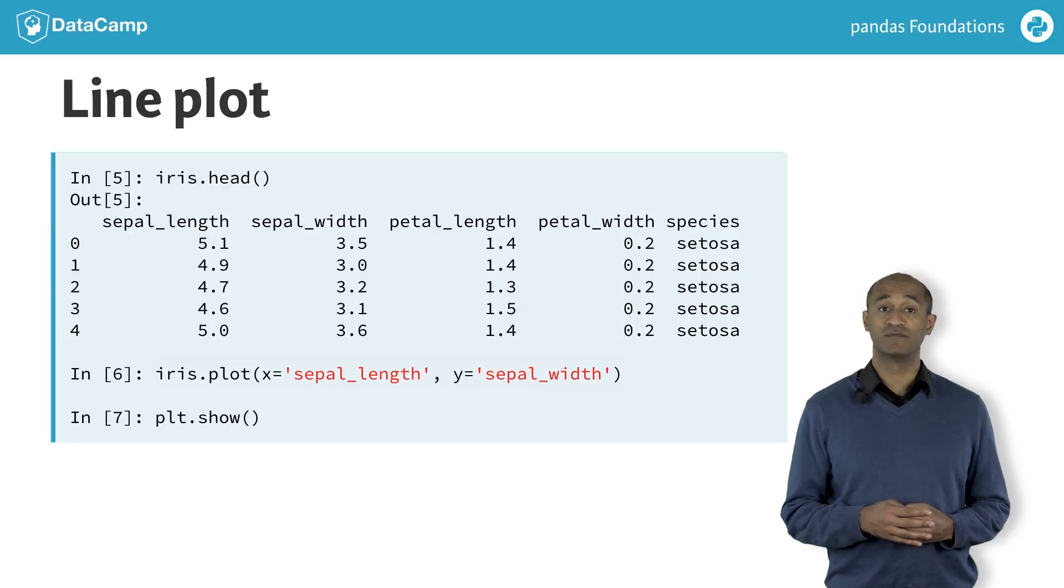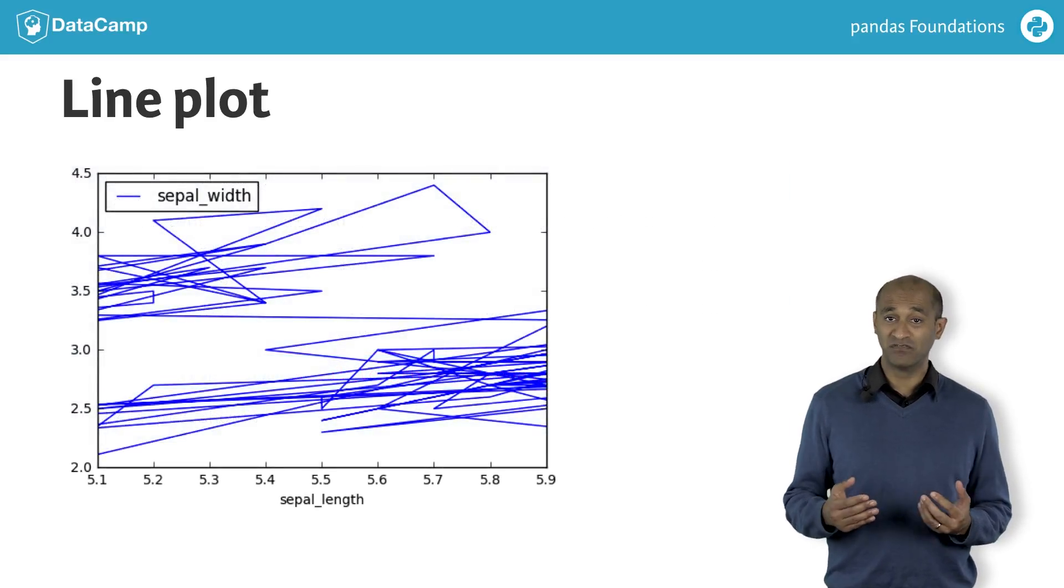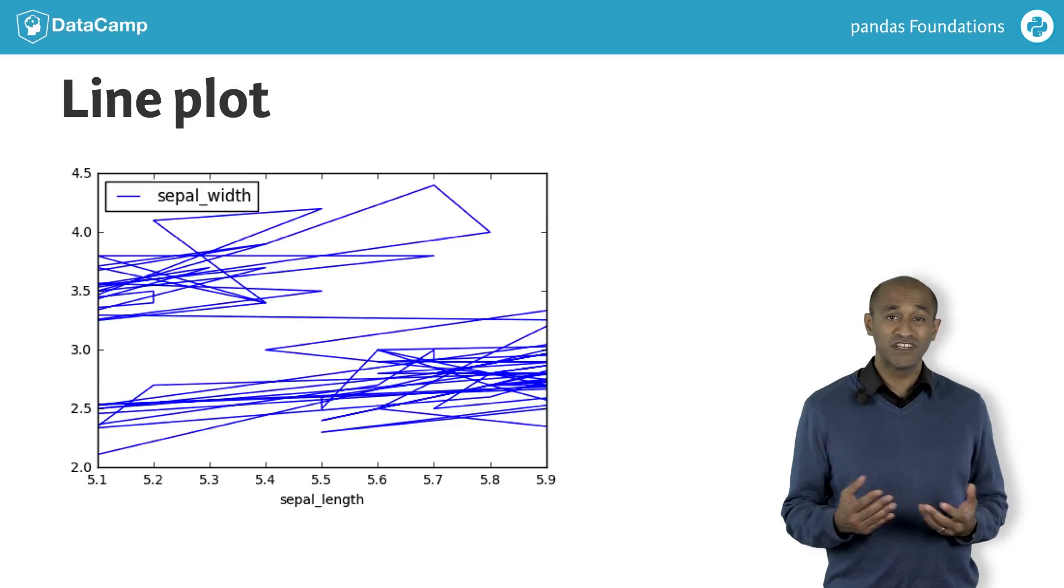First, let's draw some data with the data frame plot method. We can specify particular column names for the x and y axes. The result is not all that useful because, by default, plot creates a line plot. For this unordered four-dimensional data set, a line plot doesn't make a lot of sense.